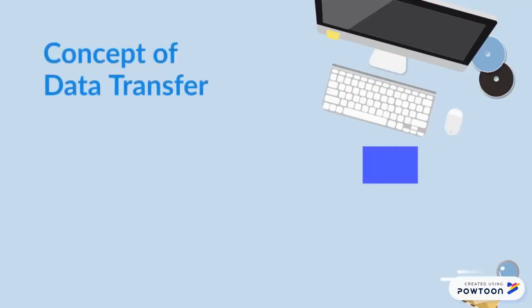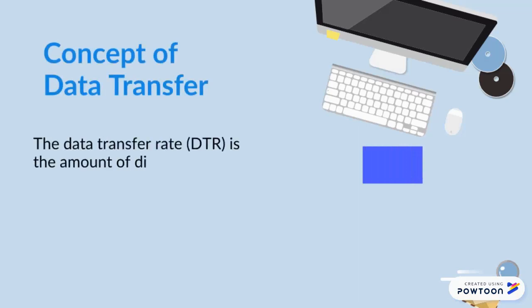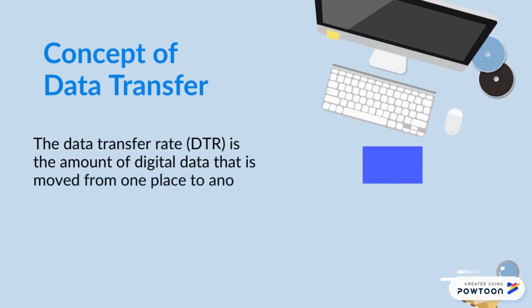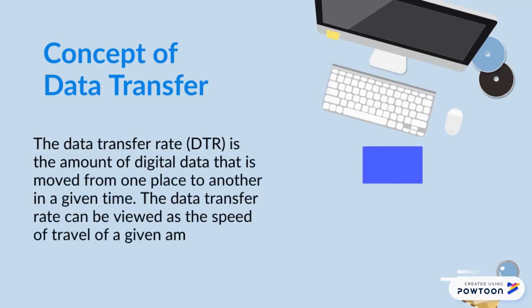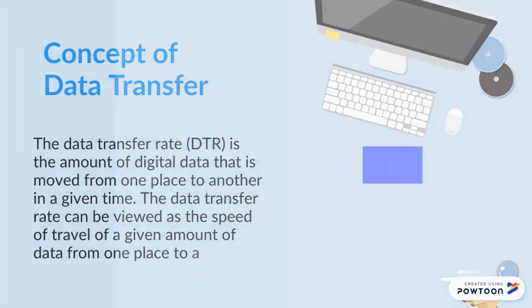First, we want to talk about the concept of data transfer. The data transfer rate is the amount of digital data that is moved from one place to another in a given time. The data transfer rate can be visualized as the speed of travel of a given amount of data from one place to another.